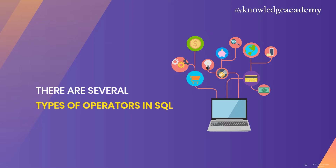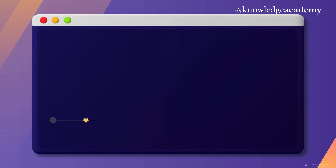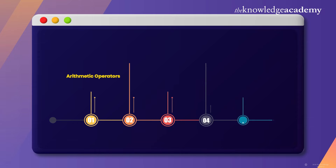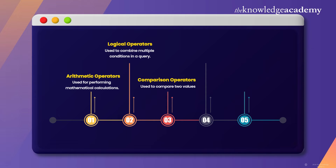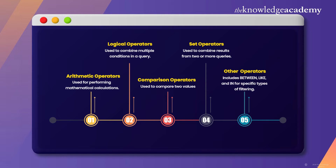There are several types of operators in SQL, and today we'll focus on five main categories: Arithmetic Operators, used for performing mathematical calculations; Logical Operators, used to combine multiple conditions in a query; Comparison Operators, used to compare two values; Set Operators, used to combine results from two or more queries; and Other Operators, which includes BETWEEN, LIKE, and IN for specific types of filtering.